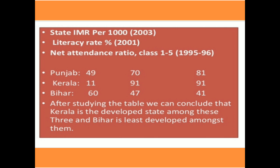Kerala's IMR is only 11 and Bihar's is 60. Kerala ranks first because infant mortality should be less in developed countries. For literacy rate, Punjab is 70, Kerala is 91, and Bihar is 47 — again Kerala ranks first. Net attendance ratio is 81 in Punjab, 91 in Kerala, and 41 in Bihar — Kerala is again at number 1. From this table we can conclude that Kerala is the most developed state among the three and Bihar is the least developed.